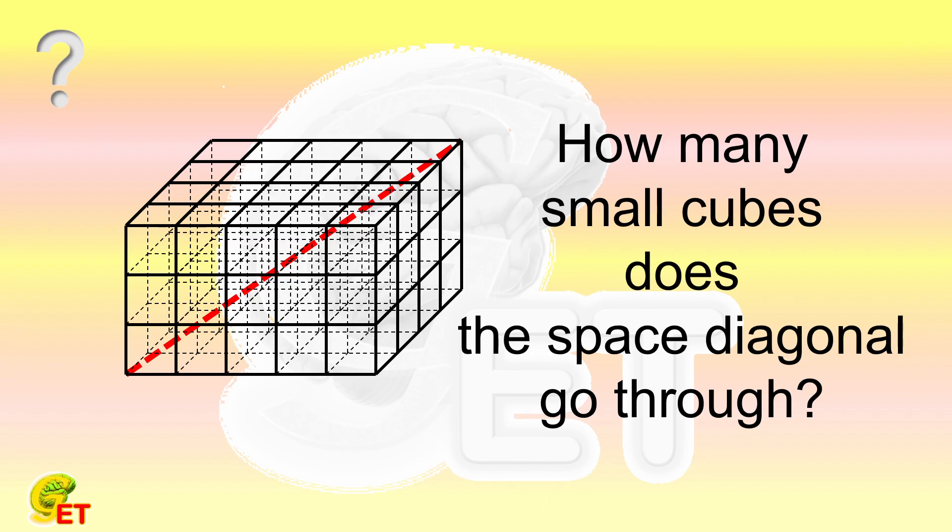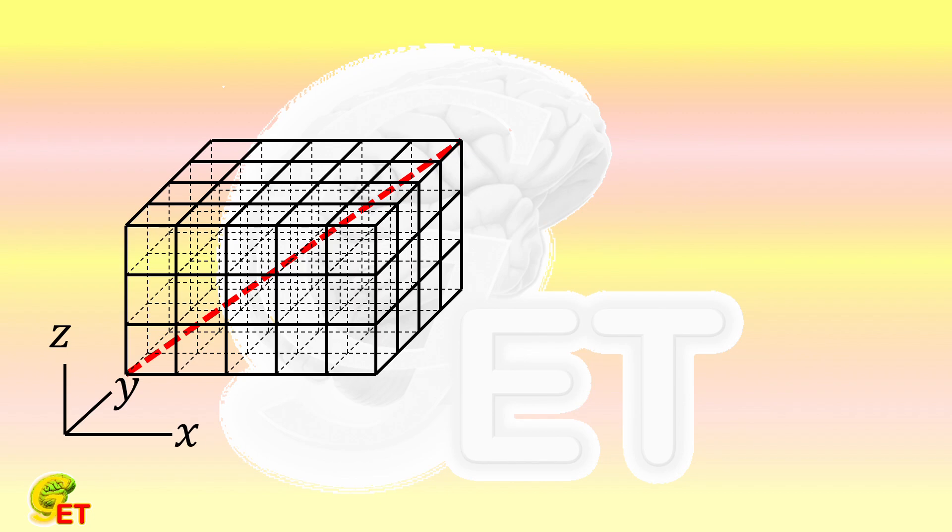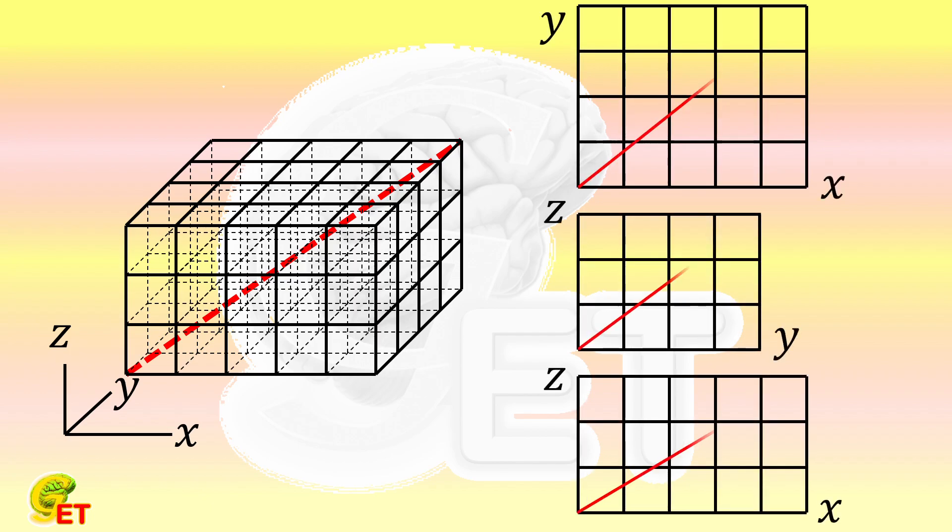For convenience, we first denote the directions of the length, width, and height of the large cuboid as x, y, and z. The projections of the space diagonal of the cuboid in the xy, yz, and zx planes look like this.